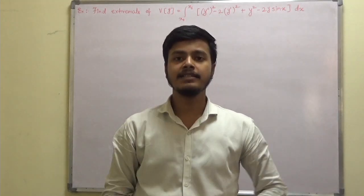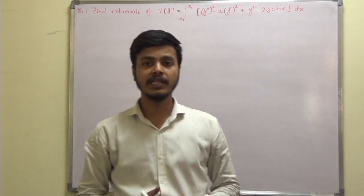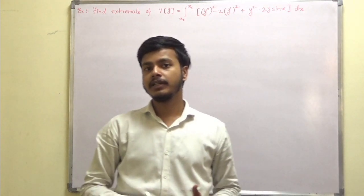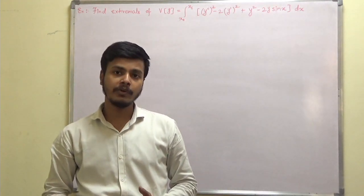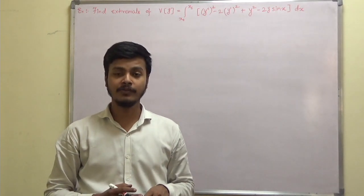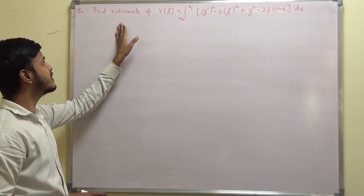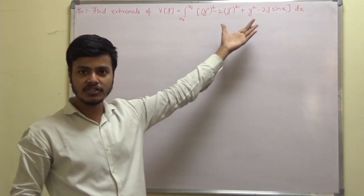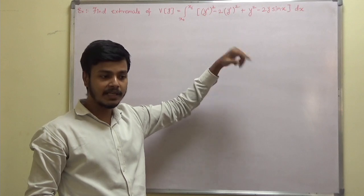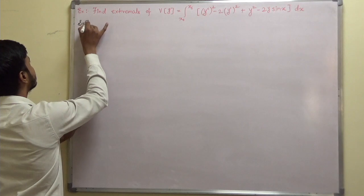In the last learning video we started the topic where functionals are dependent on higher order derivatives. Continuing that topic, we taken a problem. In this learning video also we are going to take a problem with some variety. This problem says: find the extremal of this functional. I would like to tell you what is the difference between the first example and this, but let me do few steps first.